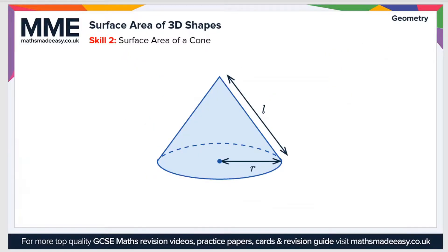So let's look at how to calculate the surface area of a cone now. So in a cone, there are two faces. There's the slanted or curved face across the top. So let's calculate the surface area of that first. So the formula we need for that is pi RL.